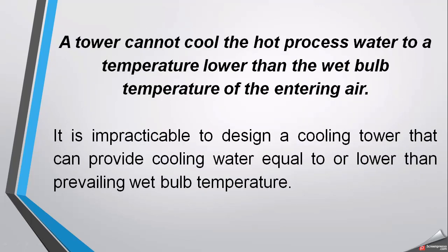Now we come to the explanation of cooling tower efficiency. A tower cannot cool the hot processed water to a temperature lower than the wet bulb temperature of the entering air — this is the thumb rule. The lowest possible temperature attained by the air leaving the tower equals the wet bulb temperature; normally it is higher. Therefore, it is impractical to design a cooling tower that provides cooling equal to or lower than the prevailing wet bulb temperature.